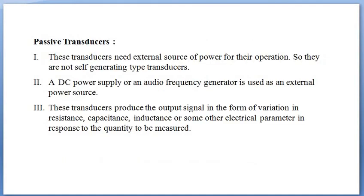Passive transducers, in contrast, need an external source of power for their operation — they are not self-generating type transducers. A DC power supply or an audio frequency generator is used as an external power source. These transducers produce the output signal in the form of variation in resistance, variation of capacitance, inductance, or any other electrical parameter.